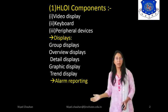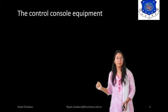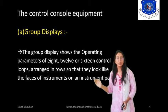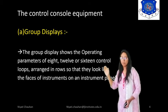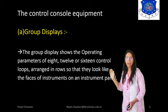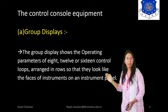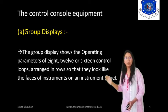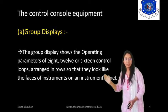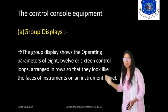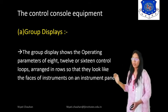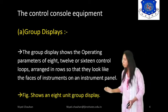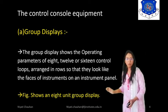Let's start with Group Display. The Group Display shows the operating parameters of 8, 12, or 16 control loops, arranged in rows so that they look like the faces of instruments on an instrument panel. The figure shows an 8-unit group display.